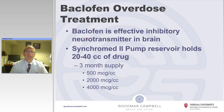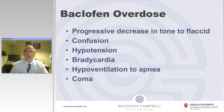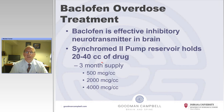Baclofen is an effective neurotransmitter in the brain. The SynchroMed 2 pump reservoir holds 20 to 40 mLs of drug, which can be 2,000 to 3,000 micrograms of baclofen, or 25 to 50 micrograms of morphine. If, while filling, the needle comes out of the reservoir or was inadvertently not in the reservoir, that entire 40 mLs of 2,000 micrograms per mL — or 80 milligrams of baclofen — can go into the pocket, and that can lead to difficulties with overdose.